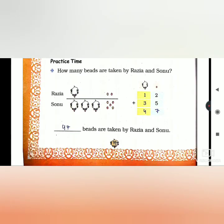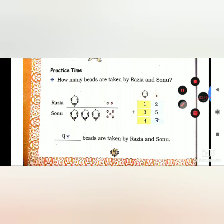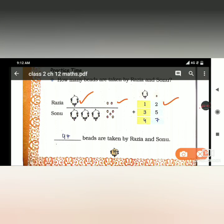Practice time: How many beads are taken by Razia and Sonu? Razia has 12, Sonu has 35. So in total, 5 plus 2 is 7, 3 plus 1 is 4, so 47 beads are taken by Razia and Sonu.